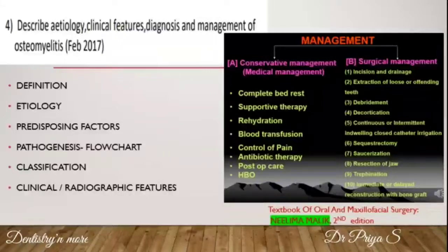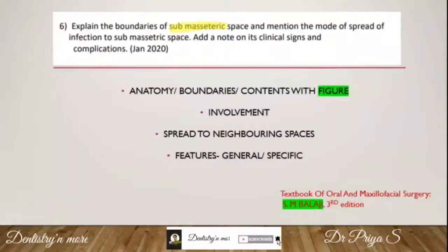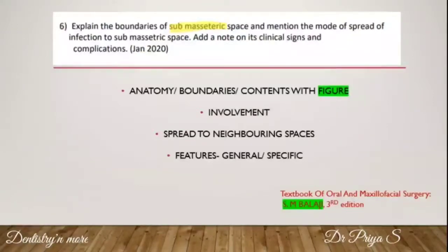These are the subheadings of osteomyelitis which you may expand or condense as per the mark allotment. Submasseteric space infection: the submasseteric space is a part of the masticator space, which is a potential secondary space of the mandible. For every space infection you need to mention the involvement — for example, the submasseteric space gets infected because of pericoronitis of the lower third molars.